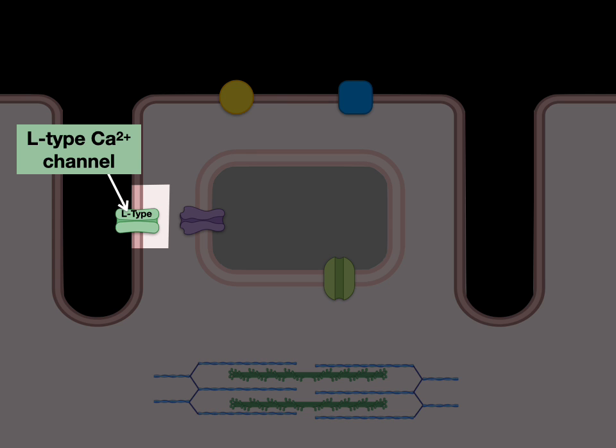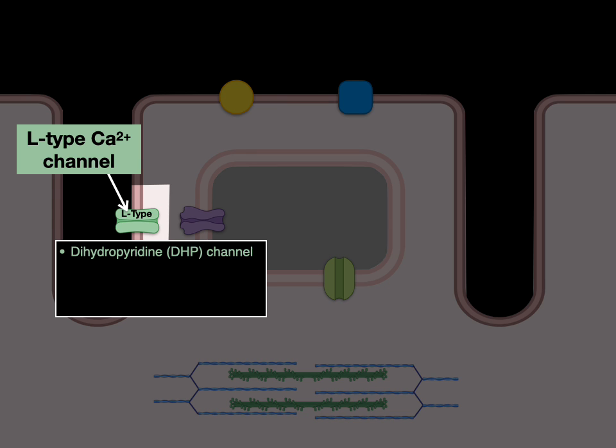The L-type calcium channels in the T-tubules are also called dihydropyridine, or DHP, channels. This name is included because some calcium channel blockers are called dihydropyridine blockers. This is a voltage-gated calcium channel that, when open, allows the initial influx of calcium that we refer to as the calcium current, or I-Ca.